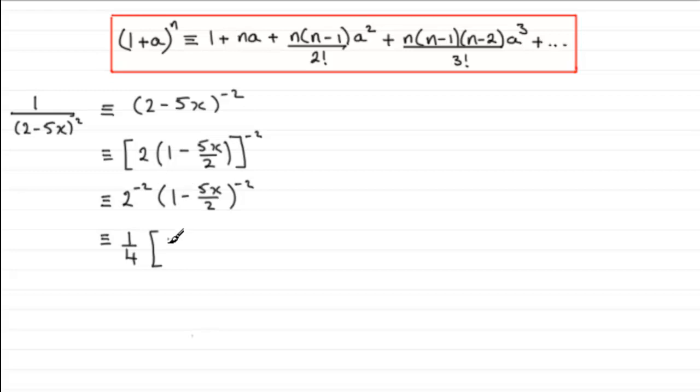So if we do that we've got 1 plus na, so we've got plus n being minus 2 times a, a being the minus 5x over 2, so we've got that.